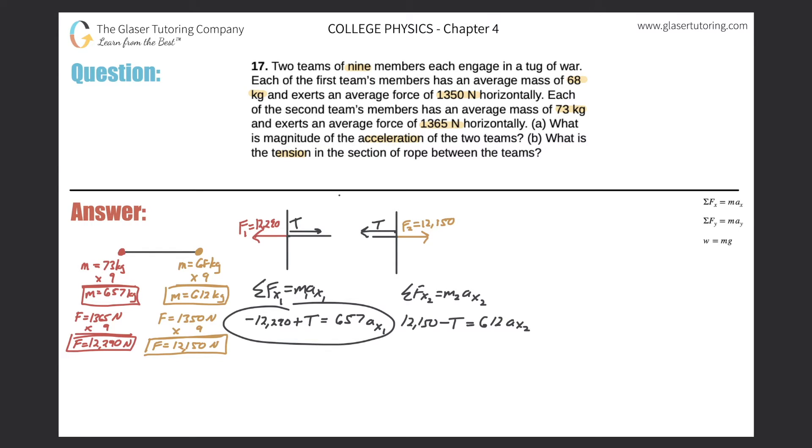So let's take equation number, this first equation, let's solve it for tension. So I just have to add this on over. So plus the 12,290. That cancels. Now I have tension is going to equal 657·a_x1 plus 12,290. Now, great. Now let's substitute this into my second equation for tension here. So let's do that. So now it's going to be 12,150 minus, careful with your parentheses, parentheses here. 657·a_x1 plus 12,290. Close the parentheses equals 612·a_x2.